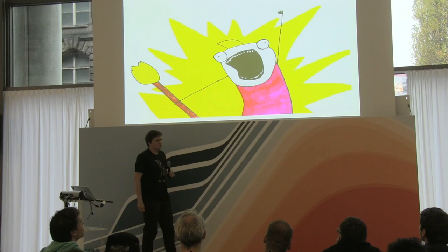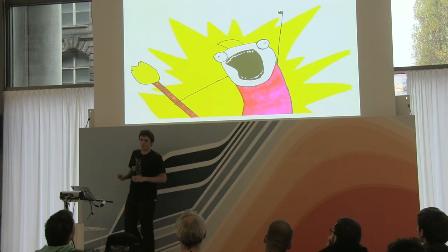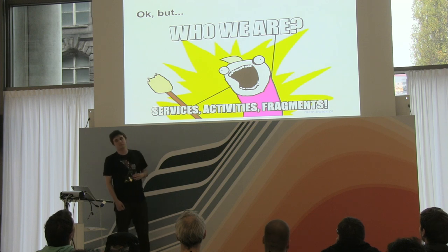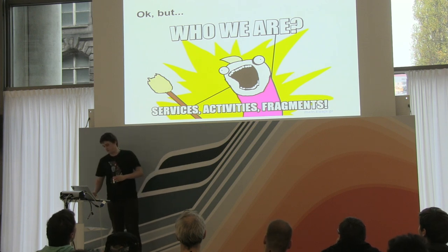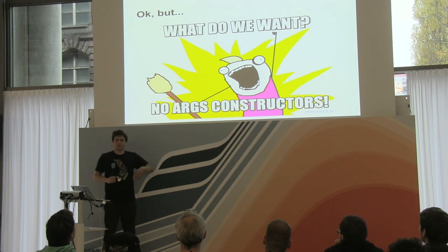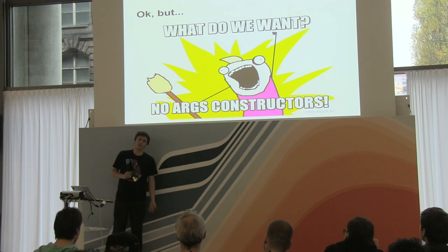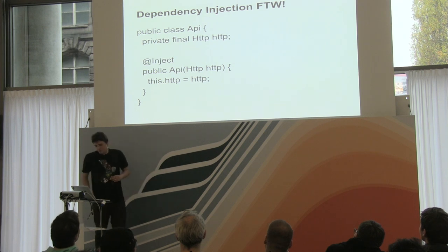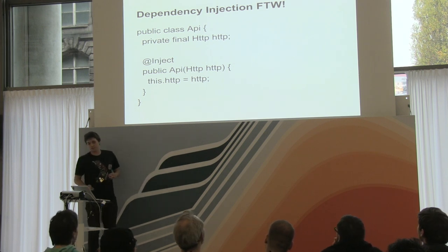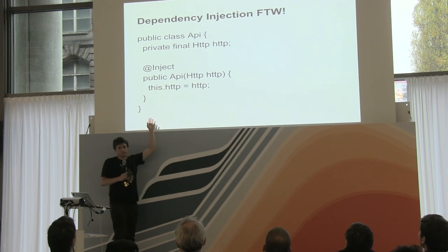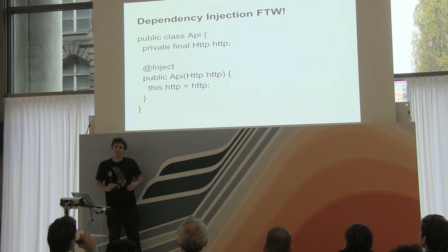On Android there is a specific problem when you try to put all your dependencies into constructors, because services, activities, fragments, content providers, and so on require empty constructors. They are not constructed by us — they are constructed by the Android framework and they need empty constructors in order to run. But with dependency injection we can construct our objects so that every time you inject the API, the HTTP implementation is injected automatically based on your configuration.